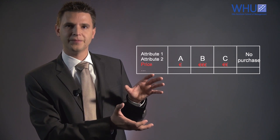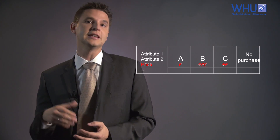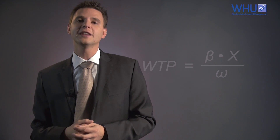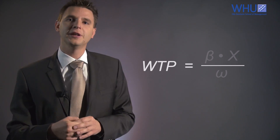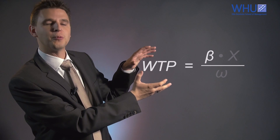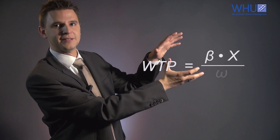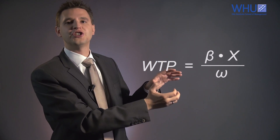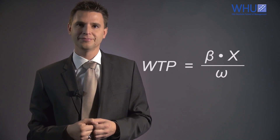No matter whether you are using choice-based conjoint or dual response, estimating willingness to pay requires that price is always included as an attribute in the choice set. We define willingness to pay as the price at which the respondent is indifferent between buying and not buying the product — meaning his probability of making a purchase is equal to 50%. Using that definition, we can calculate willingness to pay as a ratio between the product preferences beta and the product-specific attributes described in the vector x, divided by the price parameter, which is the change in utility of a one euro price change. This type of willingness to pay measurement has been widely applied in practice as well as in research.